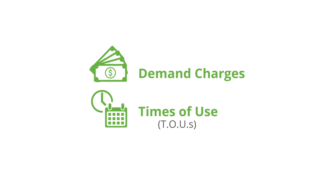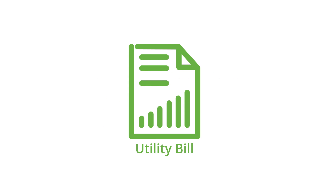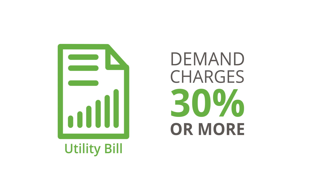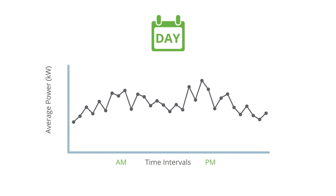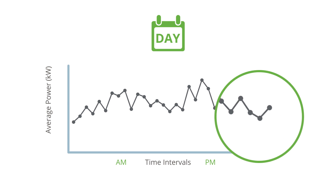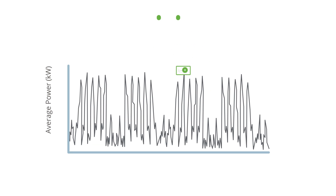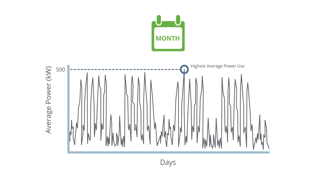To illustrate how Sunvault DX storage saves money by reducing energy costs, we should first explain utility demand charges and times of use. Demand charges are fees utilities charge commercial customers on top of regular energy costs. They're often 30% or more of an organization's utility bill, and the utility calculates them by looking at all days within a billing cycle and then averaging power usage in what are usually 15-minute time intervals. The highest average power usage within a billing cycle determines the all-hours demand charge.